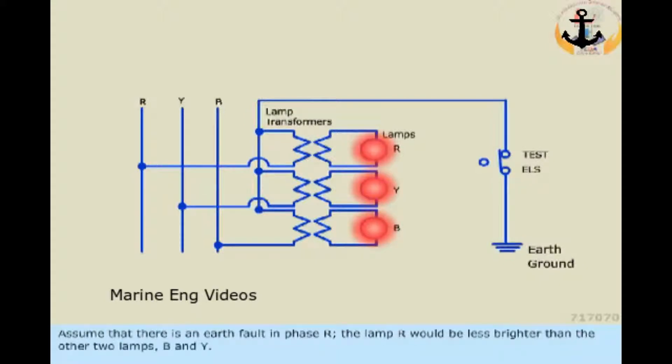Assume that there is an earth fault in phase R. The lamp R would be less brighter than the other two lamps B and Y.